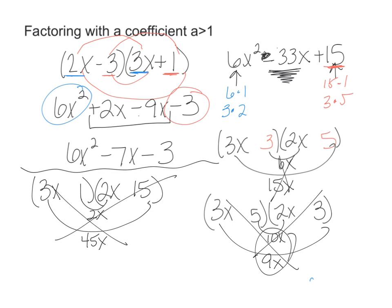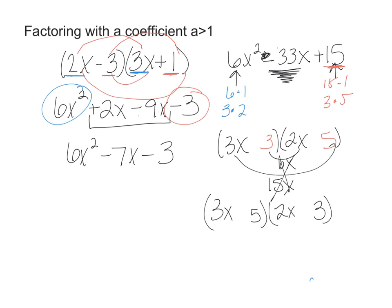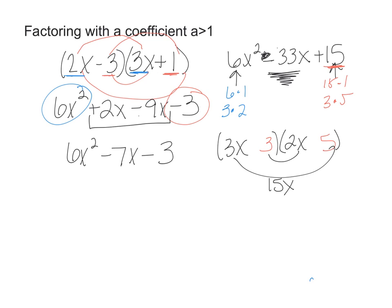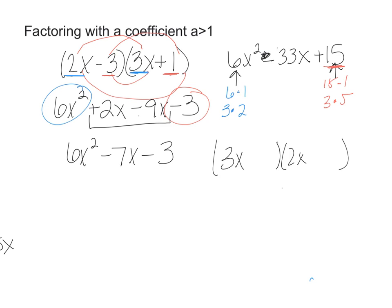So we're going to try another one. Let's switch our 15 and our 3. So now we said we have 3x and 2x. We tried the 1 and the 15. Let's try the 15 here and the 1. And my outside is 3x and my inside is 30x. Can this give me a negative 33?